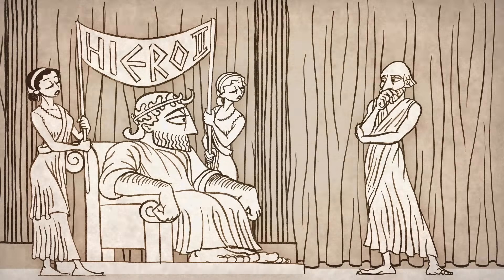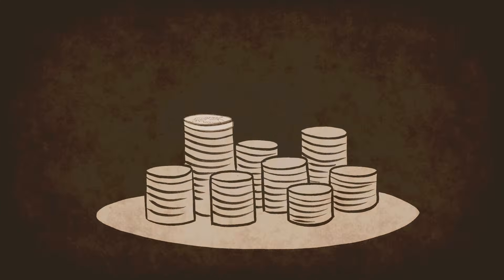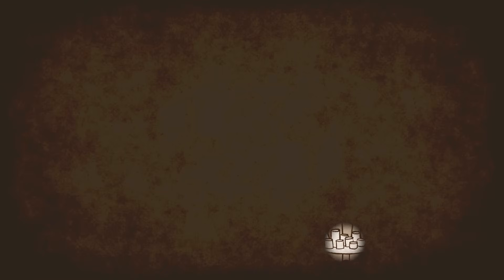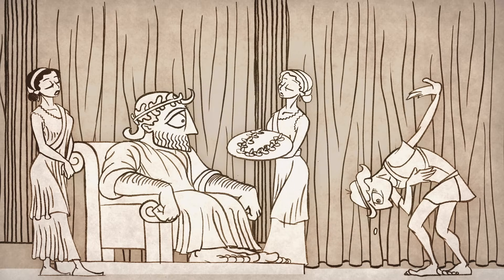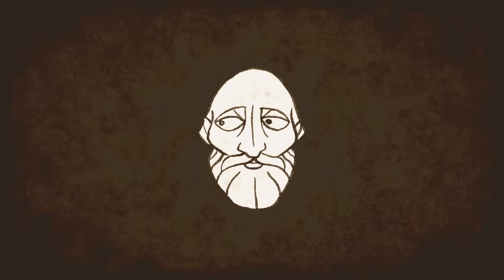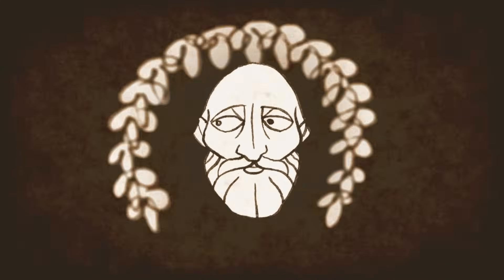One day, Archimedes was summoned by the king of Sicily to investigate if he had been cheated by a goldsmith. The king said he had given a goldsmith the exact amount of gold needed to make a crown. However, when the crown was ready, the king suspected that the goldsmith cheated and slipped some silver into the crown, keeping some of the gold for himself. The king asked Archimedes to solve the problem, but there was a catch: he couldn't do any damage to the crown.